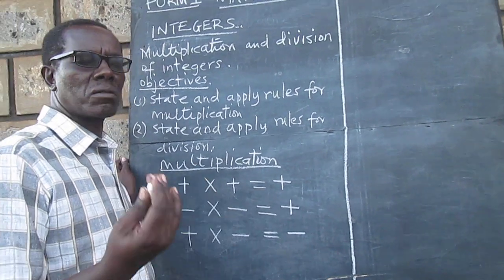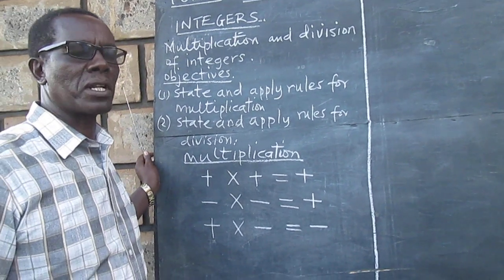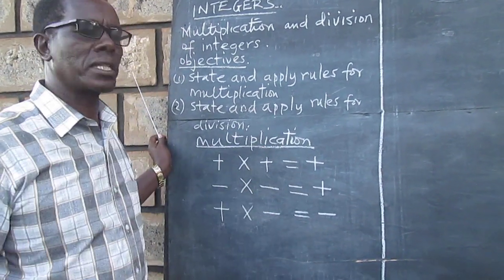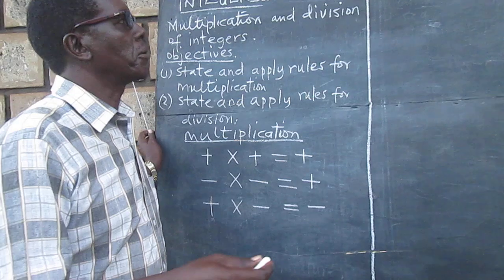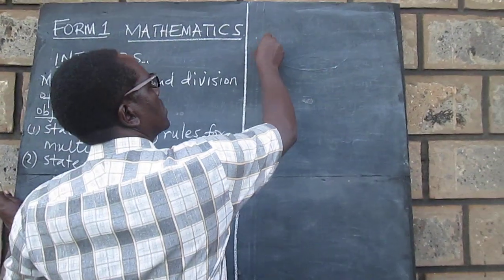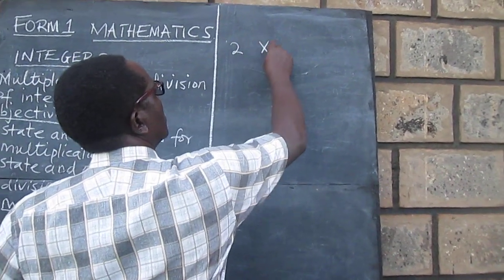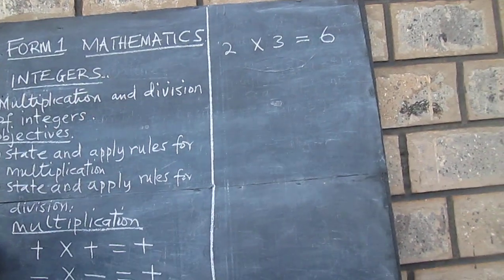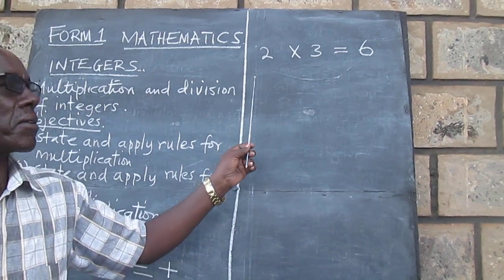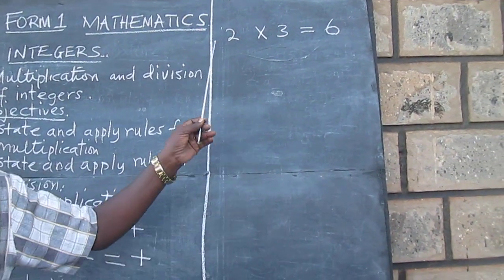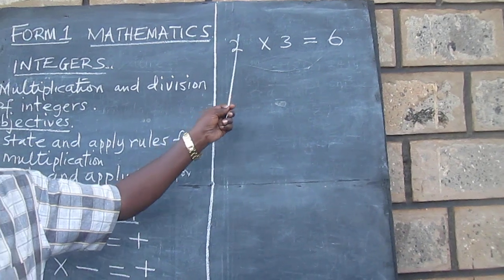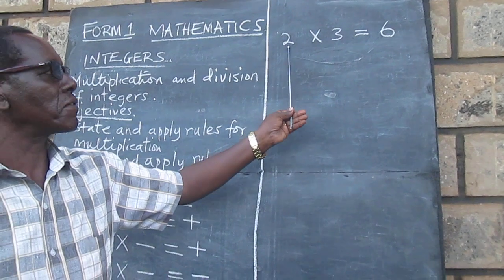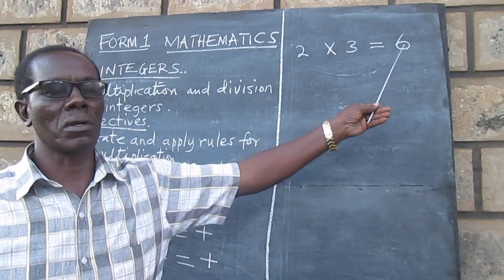We'll use simple, familiar numbers, but remember these rules apply even to larger numbers. For example, remember we said for positive integers the positive sign may not necessarily be written, but it is there. So that's a good example of positive multiplied by positive equals positive.